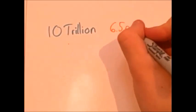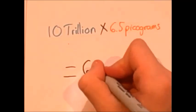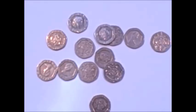So if we times 10 trillion by 6.5 pictograms, we get 65 grams. So that is about the weight of 30 in 20p coins.